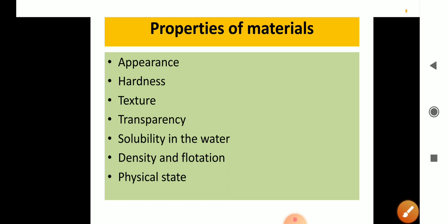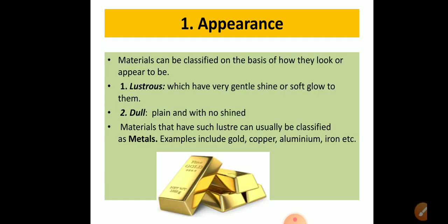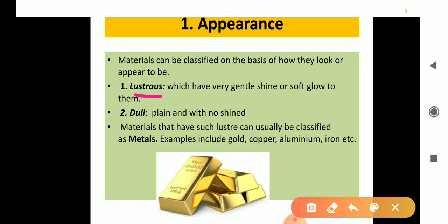Today we will cover three properties: appearance, hardness, and texture. The first is appearance. The appearance of some materials is different from others. For example, wood looks different from glass, and similarly silver looks different from paper. Some materials are shiny whereas some are dull. The shine present on a material is called lustre.